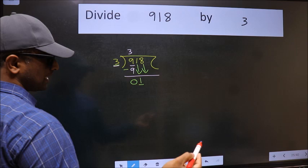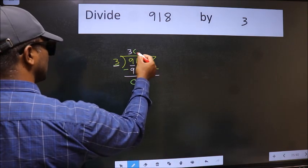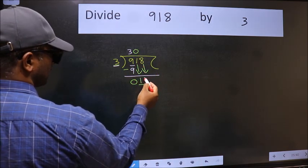The rule to bring down the second number is we should put 0 here. Then only we can bring this number down.